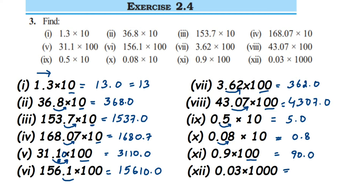The last one: we have 1000. Thousand has three zeros, so we have to move the decimal point three digits to the right. We only have two digits, so we add one extra zero. This gives us 30.0, or just 30.